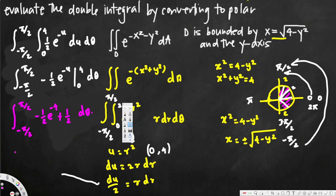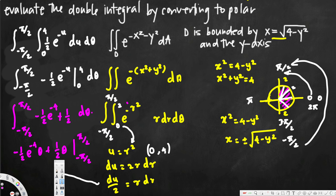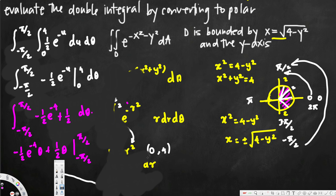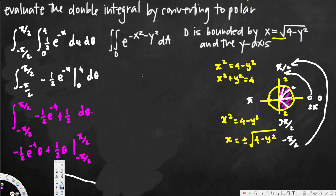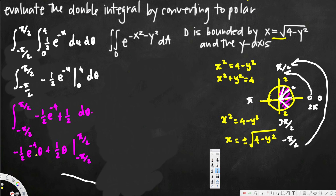So now we integrate with respect to theta. The expression inside becomes a constant: negative 1/2 e to the negative 4 plus 1/2. Integrating this with respect to theta gives negative 1/2 e to the negative 4 times theta, plus 1/2 times theta, with limits from negative π/2 to π/2.